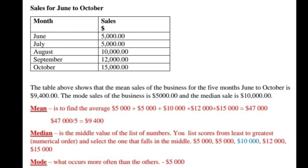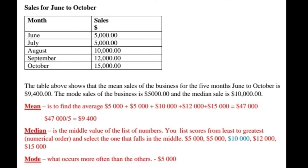So let's say that we have some sales figures. You could seek to find the mean, the median, and the mode — and you would have done this in math, so you have some ideas already. When you want to find the mean, you're really finding the average. So let's say you have the sales figures for five months, June to October. What you could do is find the mean by adding up all the figures and then dividing it by the number of values, which in this case is five. When you do that, you'll get a mean of $9,400.